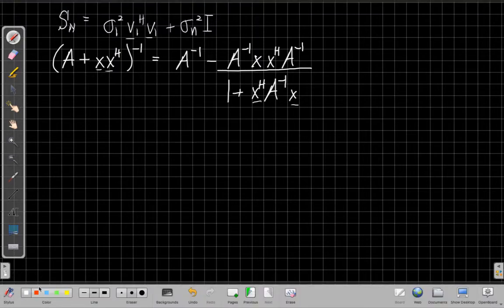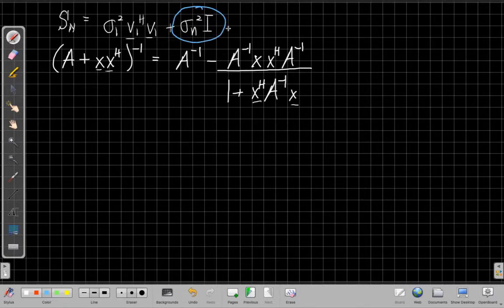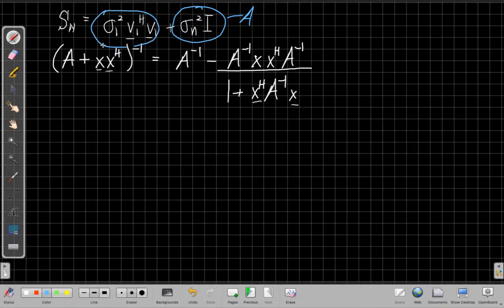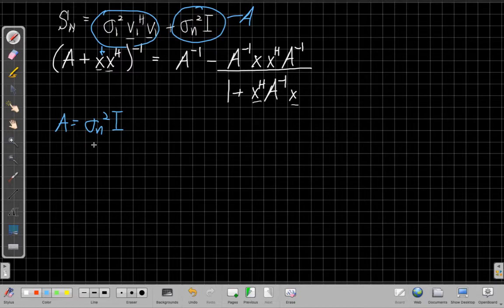I want to find the inverse of Sn, so can I match the things inside the parentheses here to what I had? The invertible matrix here is sigma N squared I, and then this is the rank one part here. I'm going to set A equal to sigma N squared I, because not only is it invertible, but it's a really easy inverse. And then the one thing I have to be a little careful is X, the column vector, needs to be sigma 1 times V1, not sigma 1 squared, but sigma 1, so that when I put two of these together, I get back my sigma 1 squared.